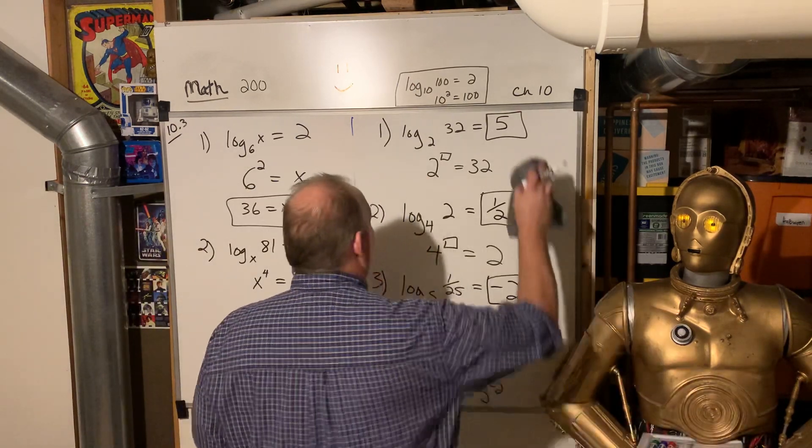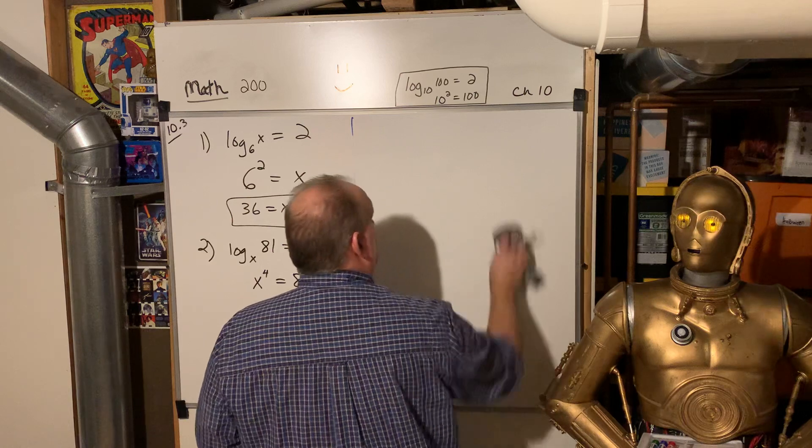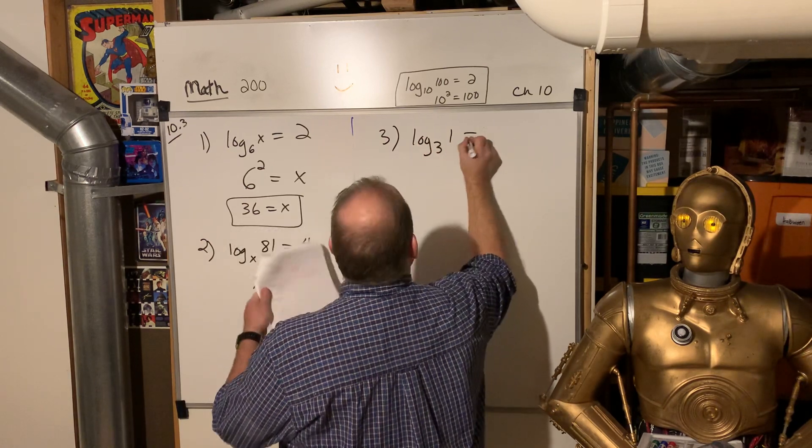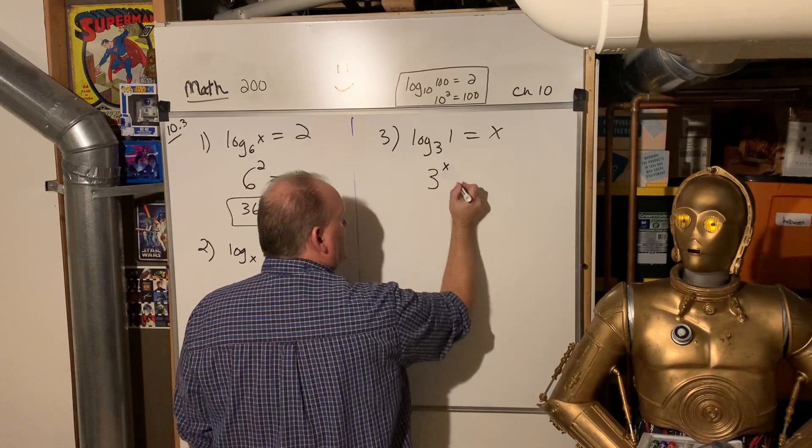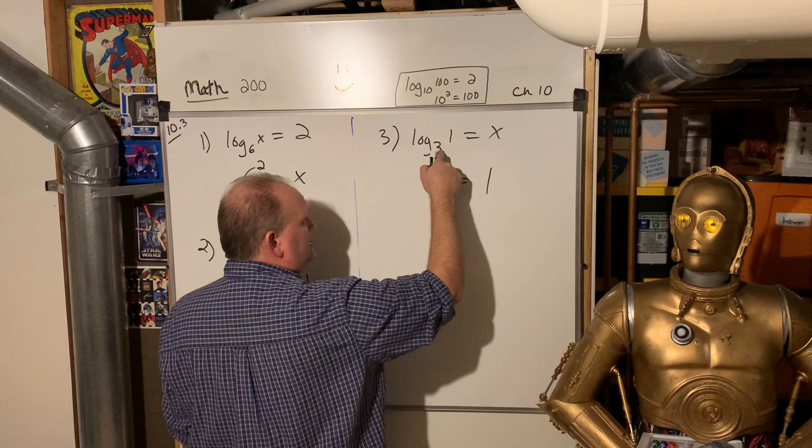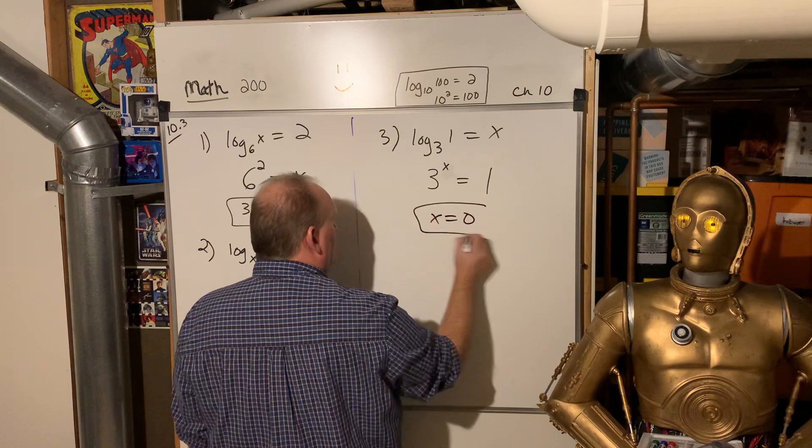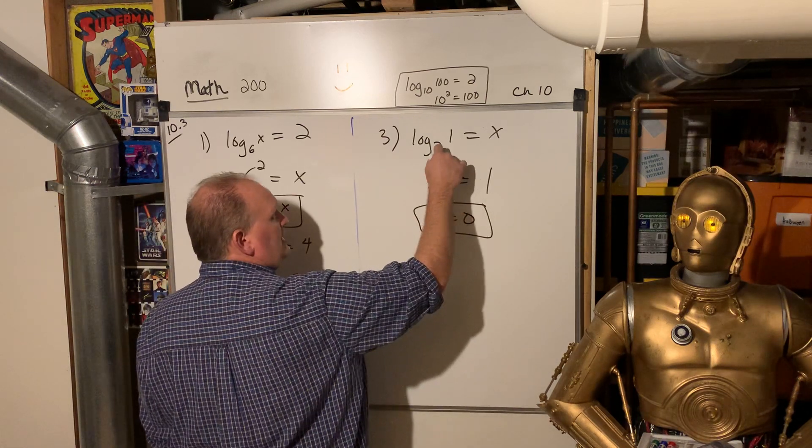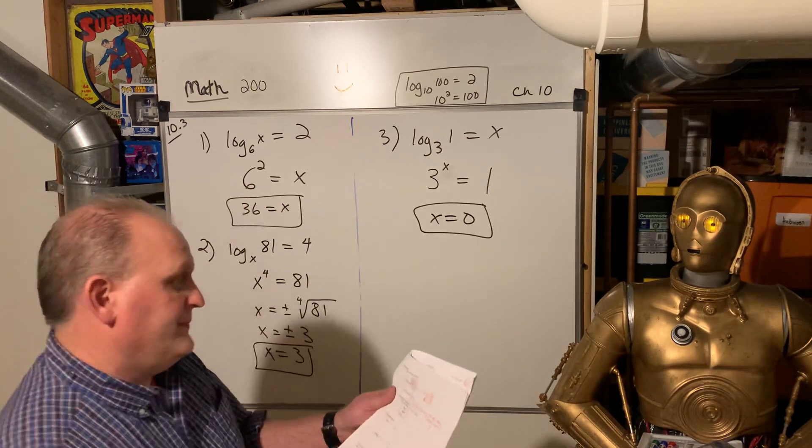The last one does trip up students too. Let's take a look at that last one. That's log base three of one is equal to x. Well, think about that. Three to what power to x power three to the x power is equal to one. Well, anything to the zero power is one. So regardless of what this is, this could be log base seven of one equals x and it would be x equals zero. No matter what log base 25 of one will equal zero. Anything when this is a one, no matter what this log is, the answer is going to be to the zero power because remember anything to the zero power is one. All right.